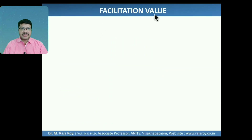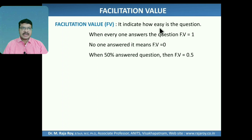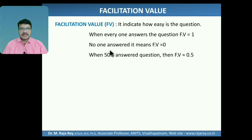The first parameter is facilitation value. Facilitation value indicates the easiness of the question. A particular question answered by all the students means facilitation value will become 1. No one has answered a particular question means facilitation value of that question is 0. 50% of the strength answered a particular question means facilitation value is 0.5.